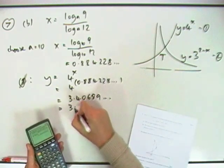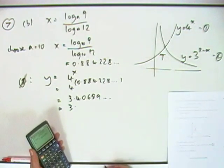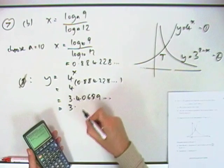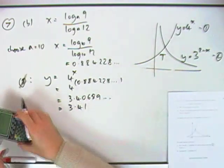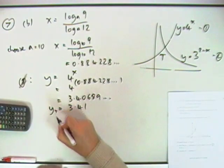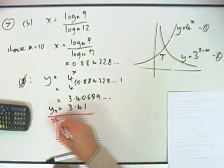No idea how many significant figures they want that to, because it just says calculate it. So I'll just make that 3.41, and there you are. Put a wee t, y sub t is 3.41.